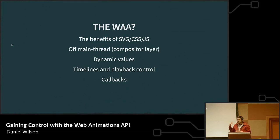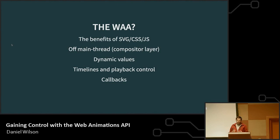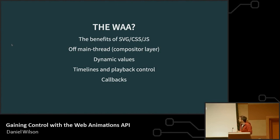CSS is the thing that gave us off-main-thread and compositor layer efficiencies. Terms like 'hardware accelerated' have come out of this. The fact that it's working off the main thread means it's not being affected by JavaScript that's slowing things up — it's able to work on its own layer. That was the key benefit that CSS gave us. But JavaScript gives us dynamic values and a lot of flexibility with a programming language to make randomized, dynamic animations.